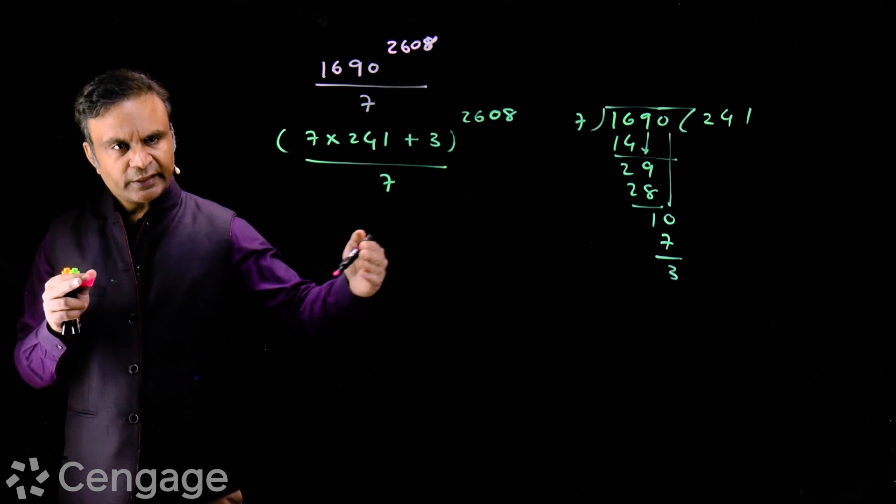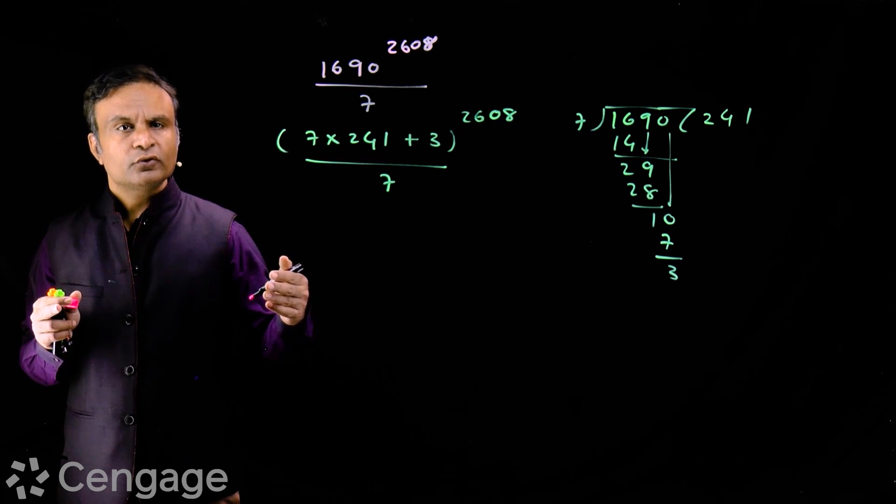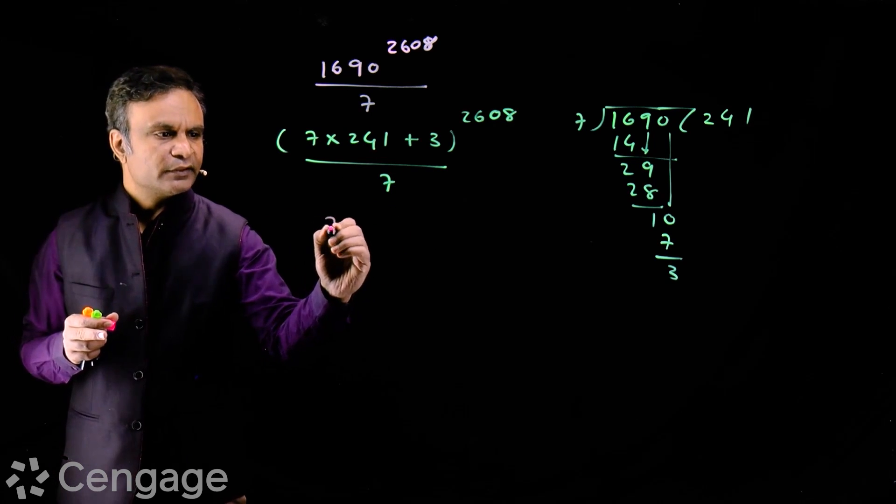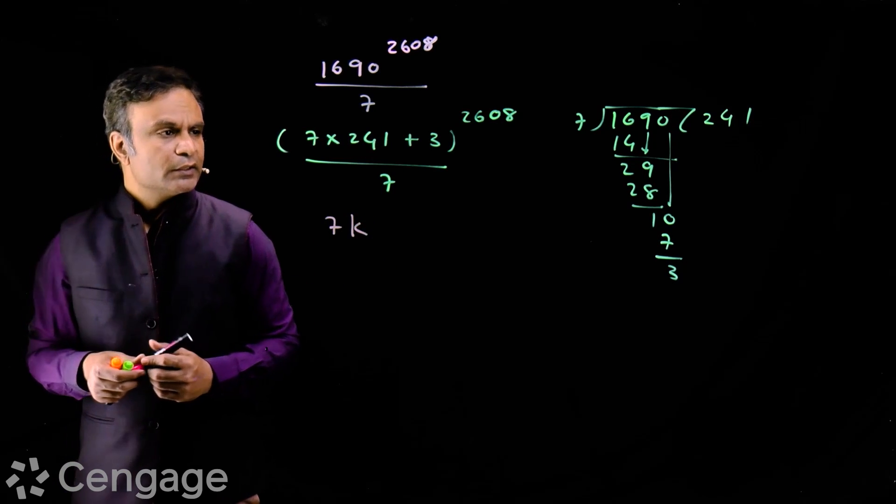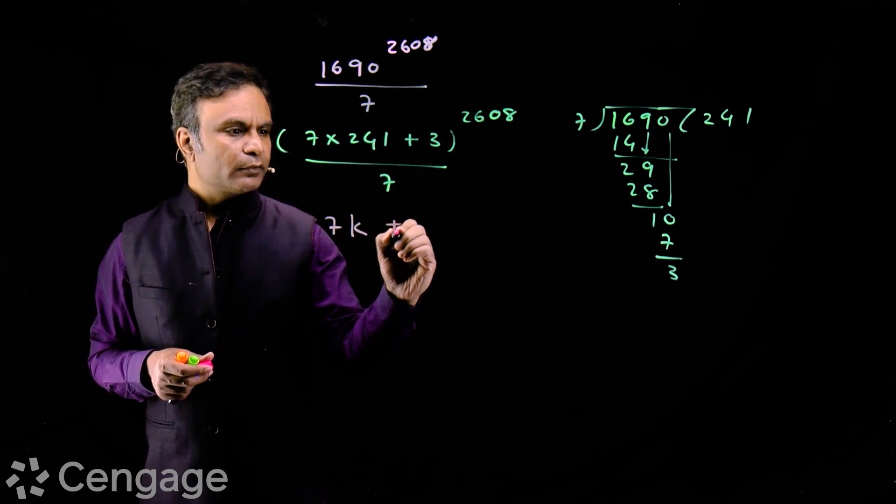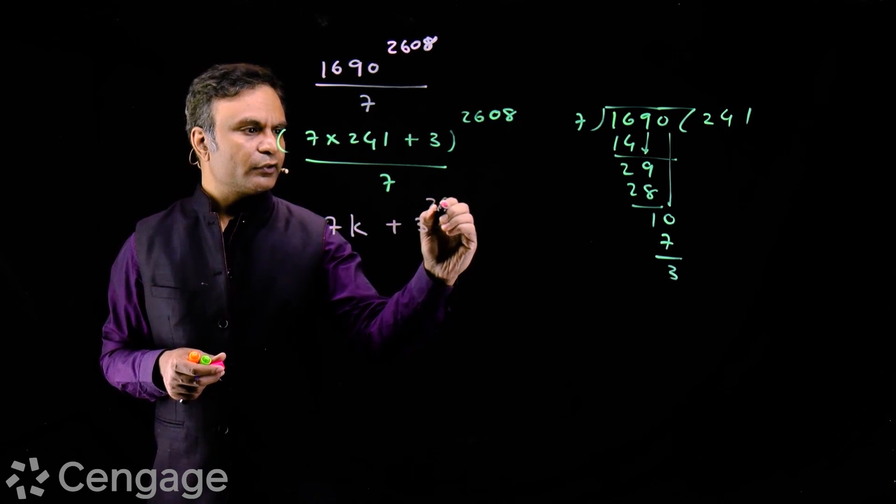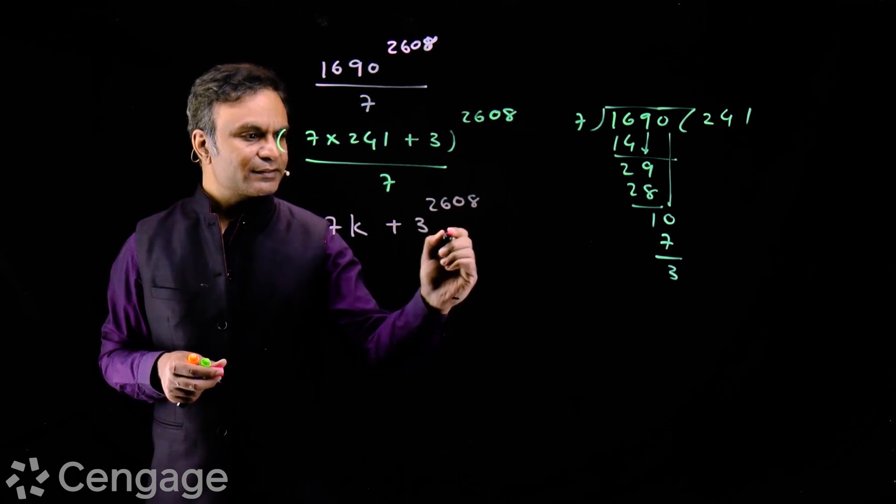Except the last term, the remaining terms will be of 7k type, divisible by 7. So we have 7k plus 3 power 2608, this is last term.